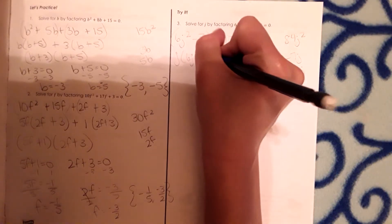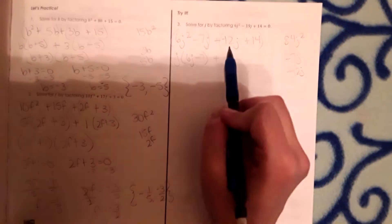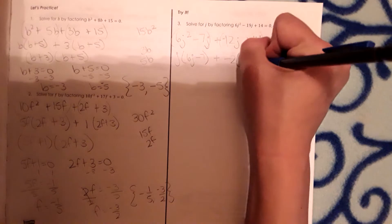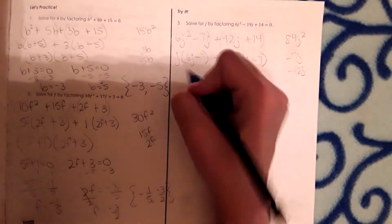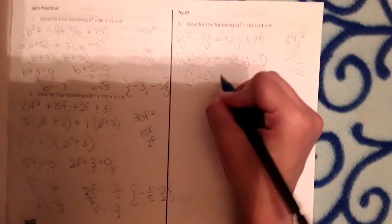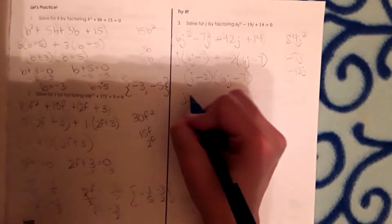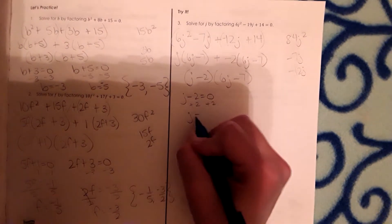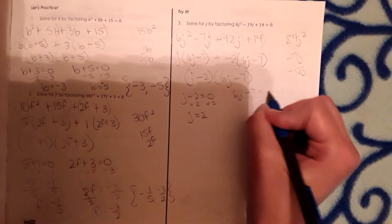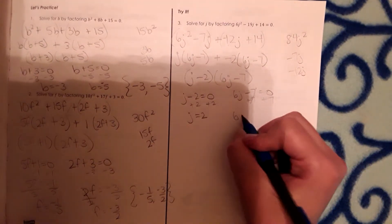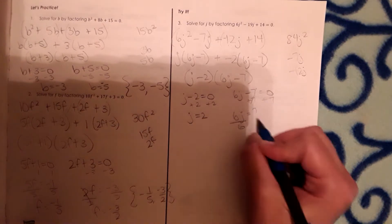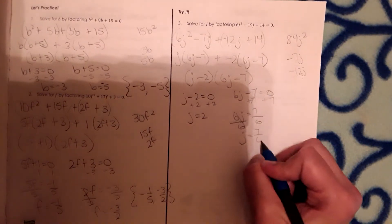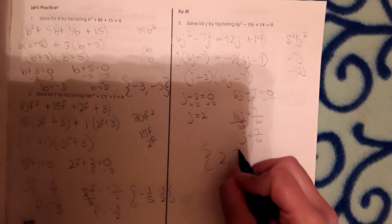And then I will pull out the greatest common factor here. The greatest common factor here is j. So I'm left with 6 j minus 7. And then for this one it is going to be negative 2. We get 6 j minus 7. So then our terms are j minus 2 and 6 j minus 7. So j minus 2. Set that equal to 0. Solve for j. j equals 2. And then 6 j minus 7 equal to 0. j equals 7 sixths. So the brackets you would have 2 and 7 sixths.